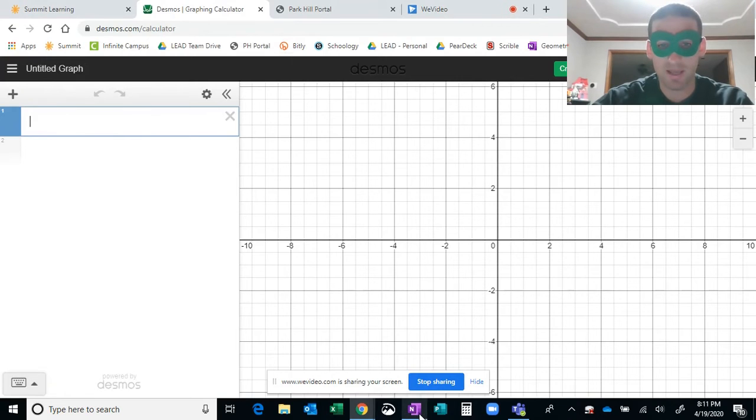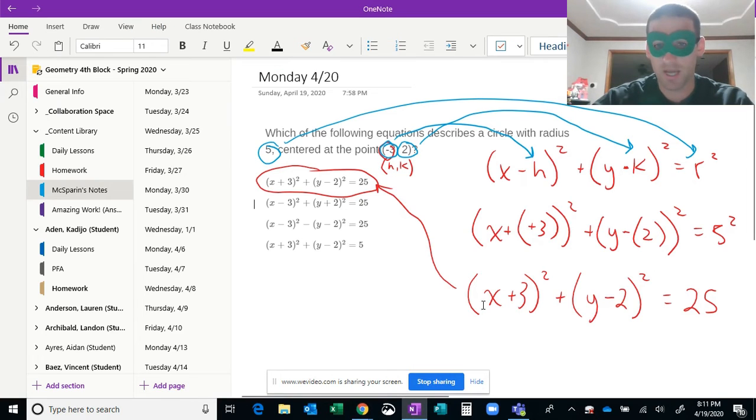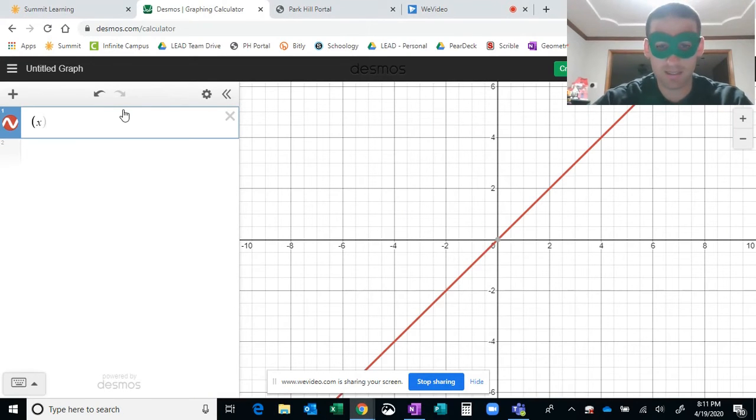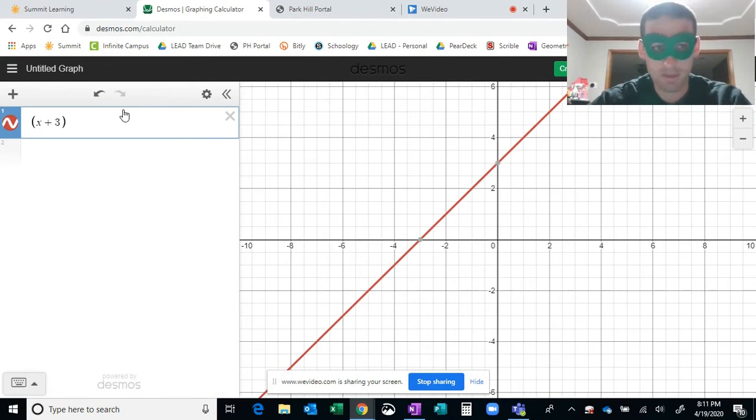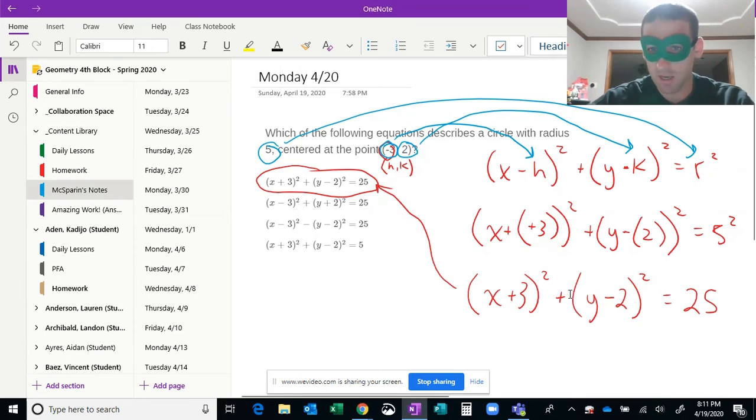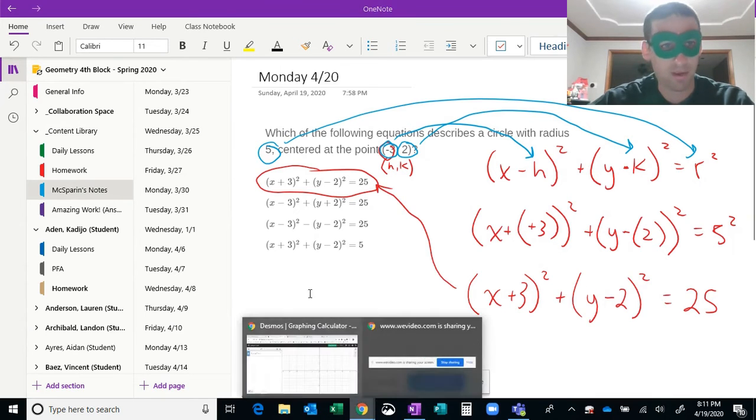I'm actually going to type in this equation. X plus 3 squared, let's type a little bit at a time. X plus 3 squared plus, and I believe it was Y minus 2, let's double check, Y minus 2 and then 25.